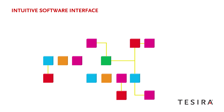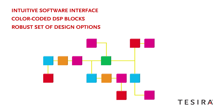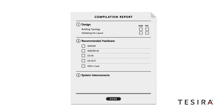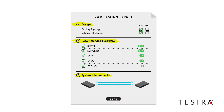TASIRA's intuitive software interface and color-coded DSP blocks make system design easy and efficient, while still offering a robust set of options that can facilitate nearly any AV design imaginable. Once the desired system is accurately laid out, the designer compiles it with a simple click of a button. The compilation engine then performs a number of operations in a matter of seconds, including validating that the design is complete, identifying Bi-Amp hardware required and recommending the most cost-effective solution, and documenting the necessary system interconnects to ensure proper, stable operation.